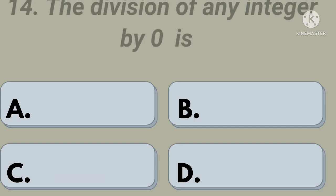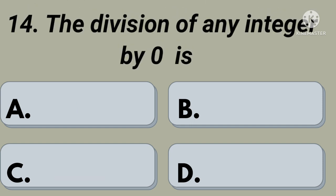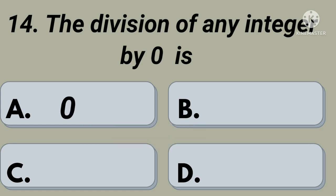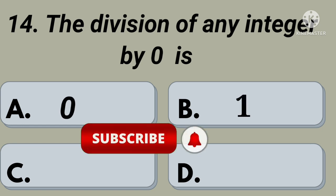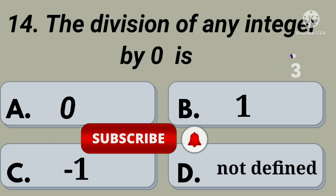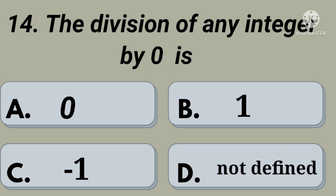Fourteenth question: the division of any integer by 0 is. Option A: 0, option B: 1, option C: minus 1, option D: not defined. Your time starts now. Right, answer D: not defined.